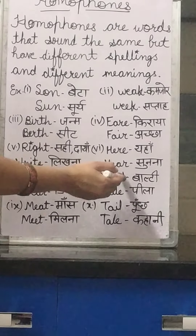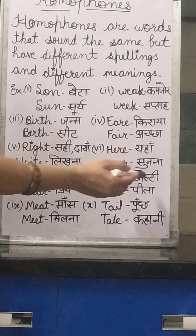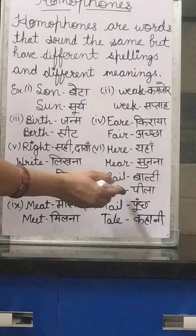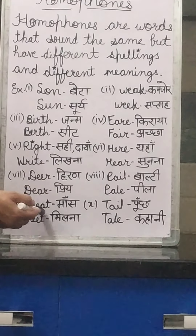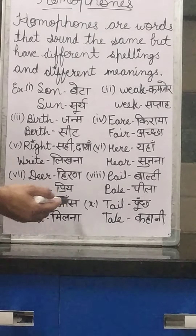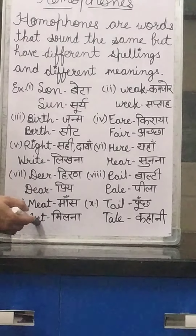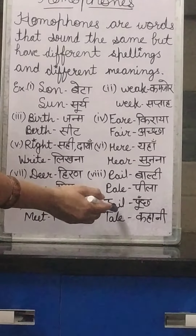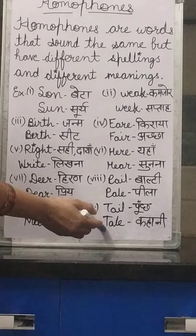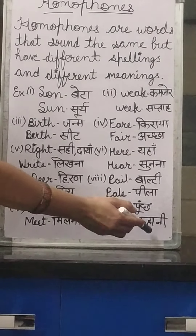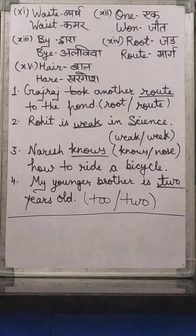Next: P-E-A-R means 'pear' (fruit), and P-A-I-R means 'pair' (jodi). Then: M-A-D-E means 'made' (banaya), and M-A-I-D means 'maid' (milna/kaam waali). Also: T-A-I-L means 'tail' (poonch), and T-A-L-E means 'tale' (kahani).